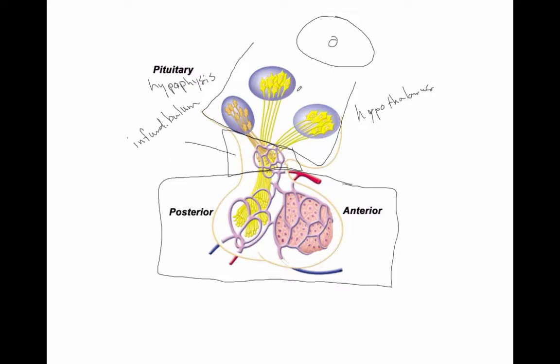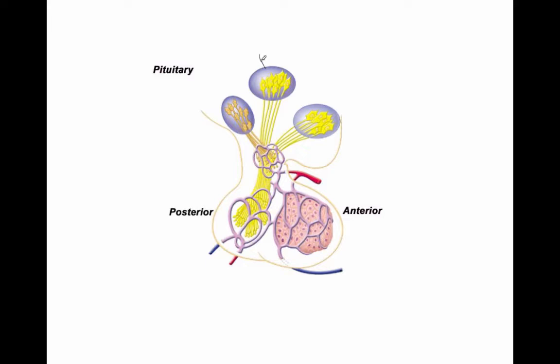The infundibulum is the connection between the hypothalamus and the hypophysis or pituitary gland. The pituitary gland has a posterior portion and an anterior portion. The posterior portion is managed by the paraventricular nucleus, which is parallel to the third ventricle. A cluster of neurons in the central nervous system is called a nucleus, whereas a cluster of neurons in the peripheral nervous system is called a ganglia.